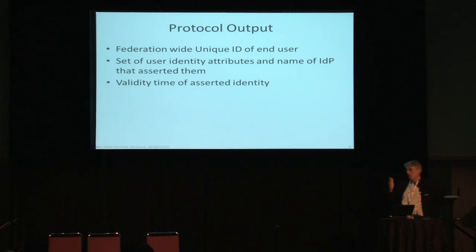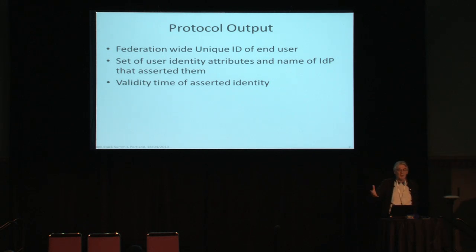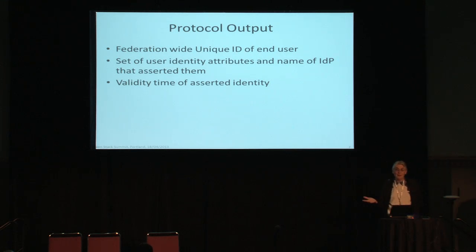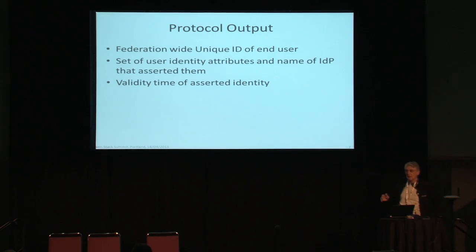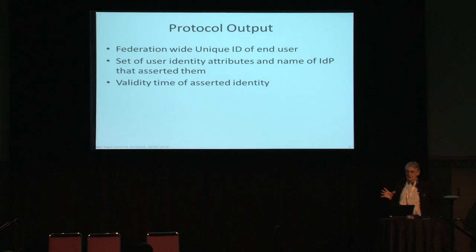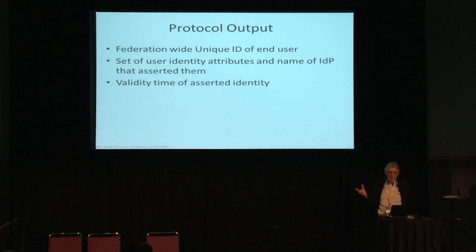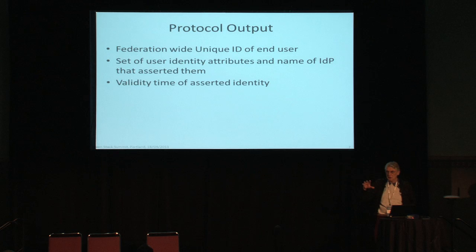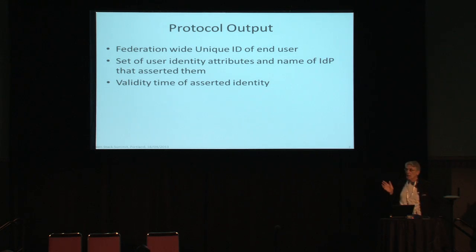The output from any protocol-dependent module consists of essentially three parameters. First, a unique user ID generated by the IDP as a handle on the user. Second, a set of identity attributes — for example, you work for organization X, your role is manager — along with the name of the IDP that asserted them. We've also built attribute aggregation into the system to support sets of sets. Third, the validity time of the assertion, because federated identity protocols typically give time-limited assertions rather than building in revocation — for example, valid for one hour, two hours, or 24 hours.